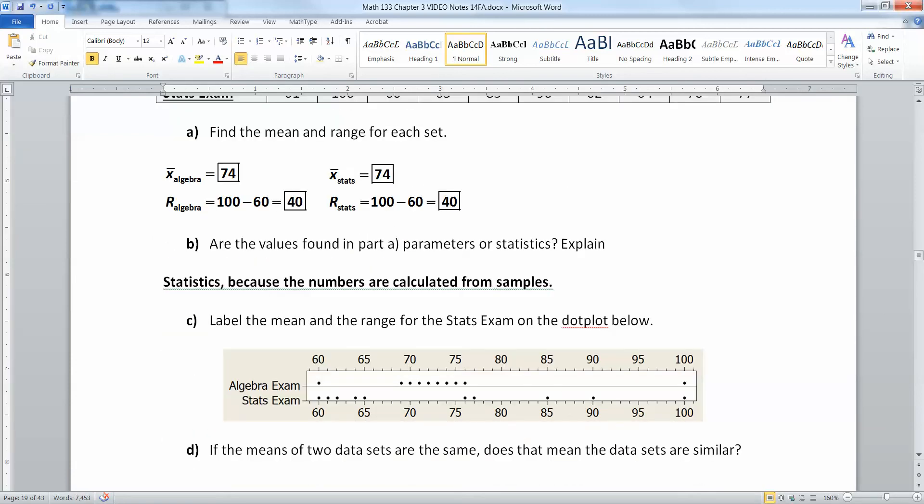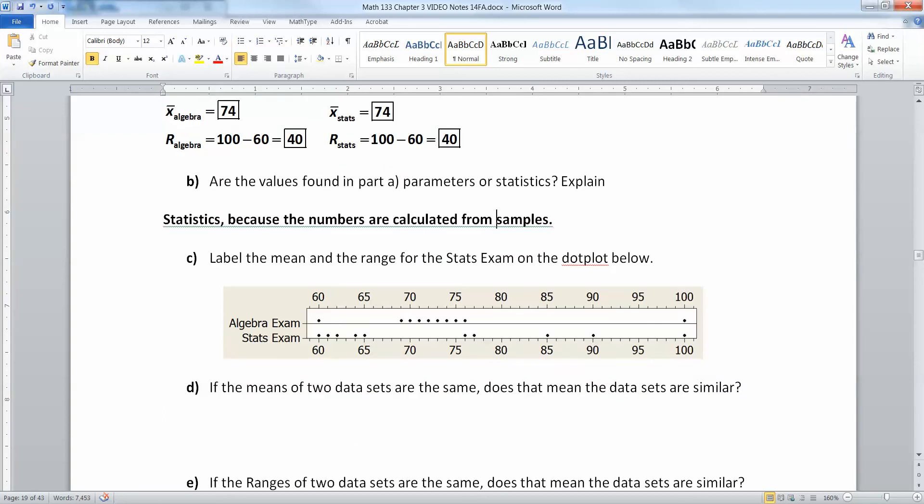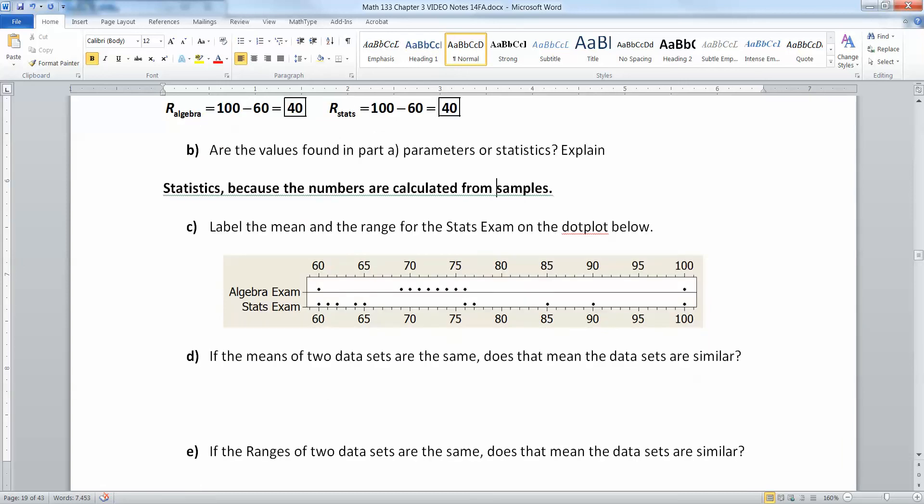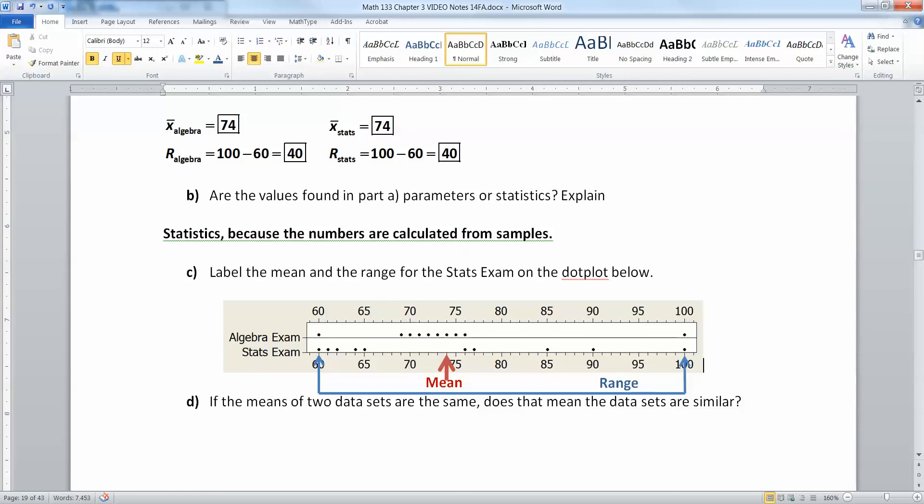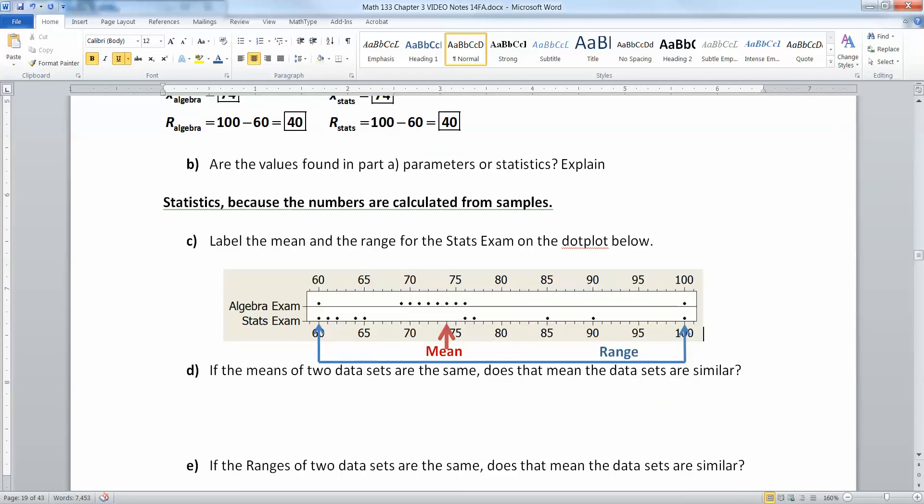Next we're going to label the mean and the range for the stats exam on the dot plot below. We're just going to do stats exam. It'd be the same for the algebra exam. The mean is right here at 74, and the range is from 60 to 100. So it goes all the way from this marker over here, all the way to that marker over there.